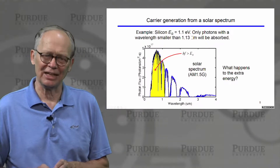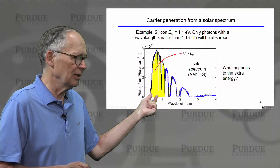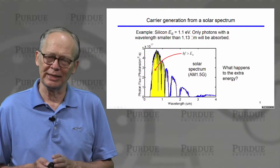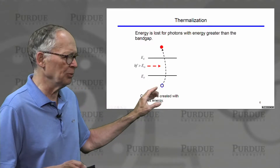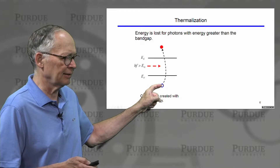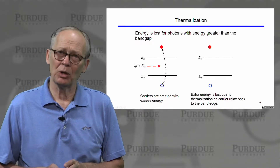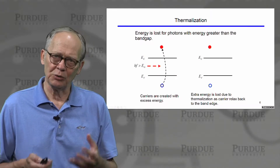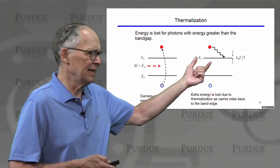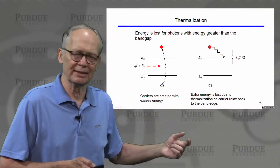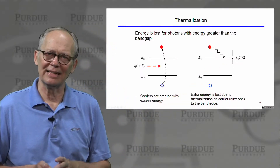What happens to the extra energy? If the wavelength is right at 1.13 micrometers, we have just enough energy. But what if the wavelength is even shorter — we have more energy than needed? If we have more energy than necessary, we can excite an electron from deep in the valence band and place the electron deep in the conduction band. Carriers flow downhill in potential energy, and that extra energy is shed by various scattering processes — in probably tens of femtoseconds, the electrons end up at the bottom of the conduction band, about 1.5 kT from the band edge.